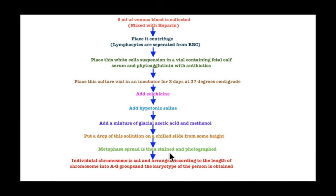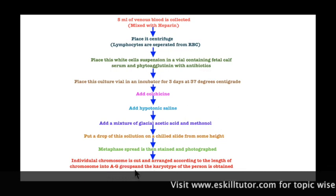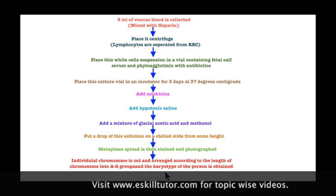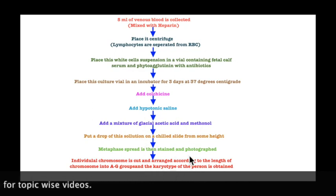The chilled slide containing the metaphase spread is stained, and photographs are taken under the microscope. After getting the photograph, the individual chromosomes are cut out and arranged according to their length — from A to G groups — and the karyotype of the person is obtained. This procedure is known as karyotyping.